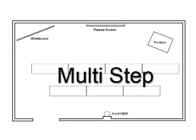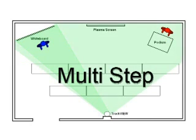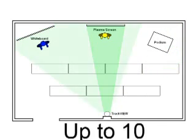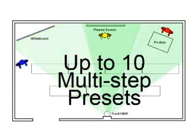Multi-step allows for multiple triggers in the field of view to be shown at the same time. In this example, the presenter starts at the whiteboard. When the other presenter walks onto a StepView mat, the camera zooms out to capture both people in the shot. When one person walks off their mat, the camera zooms in on the remaining position. TrackView can be programmed for up to ten multi-step presets when multiple presenters are working together.